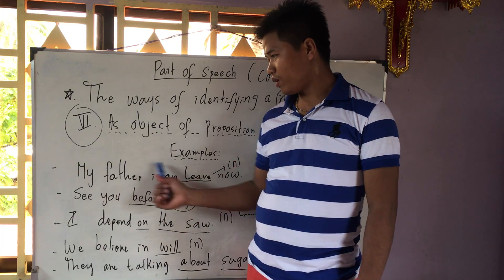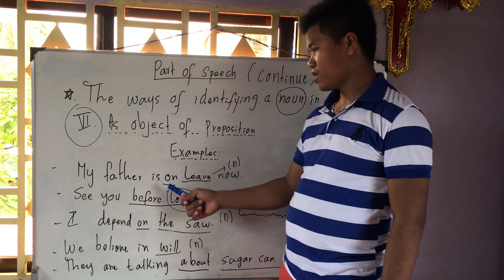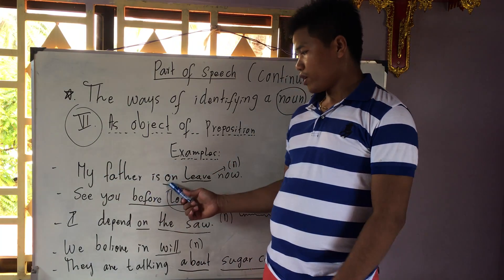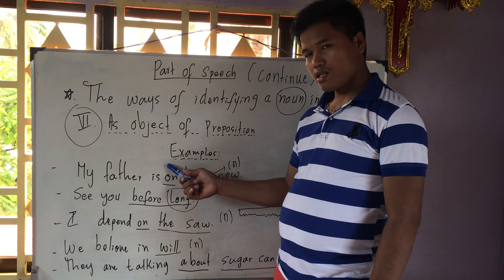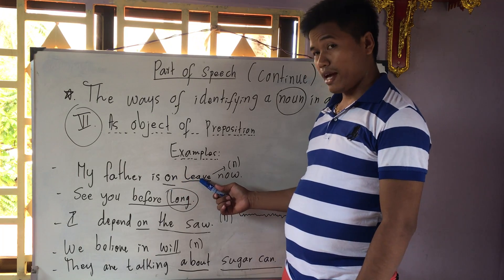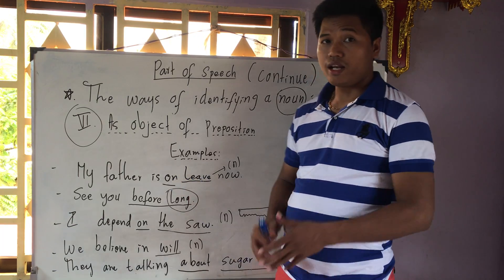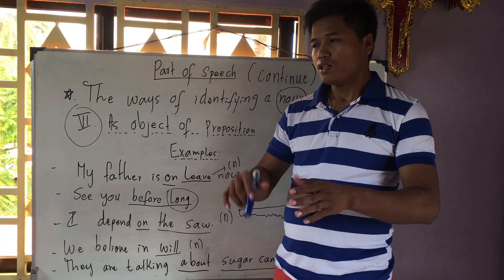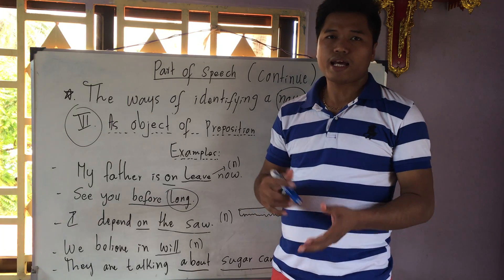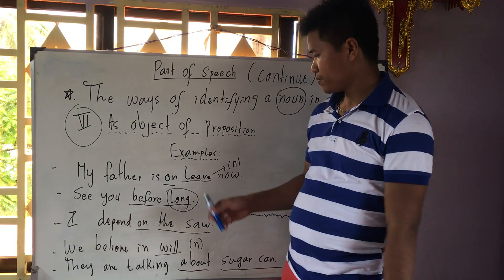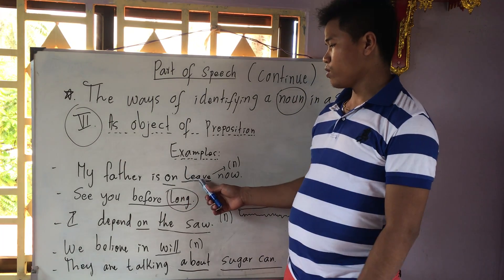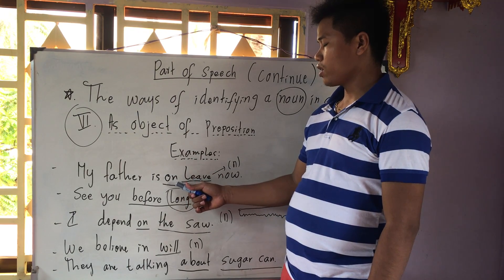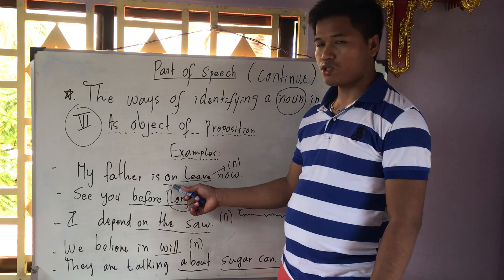For example: 'My father is on leave.' Here we look at 'on' — and 'leave' is the noun. Leave means a permission for somebody, that is asked from their manager. So 'leave' comes after the preposition 'on', meaning it is the object of the preposition.